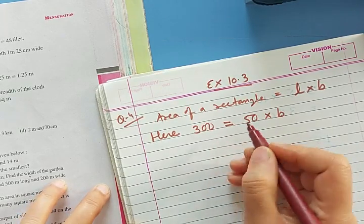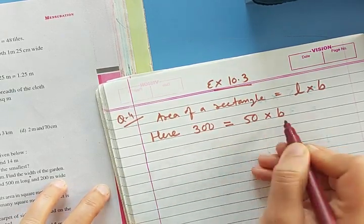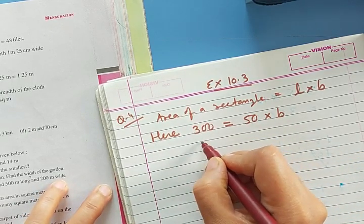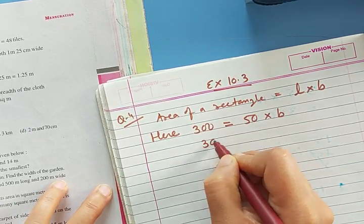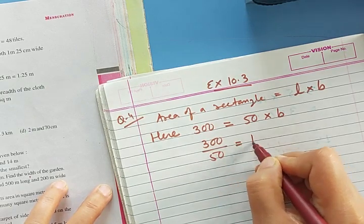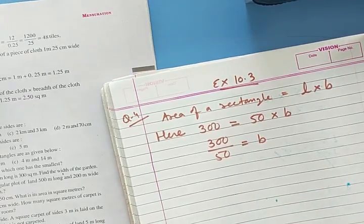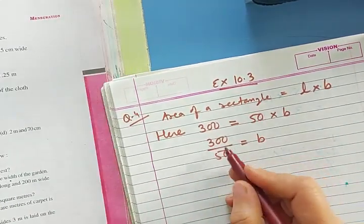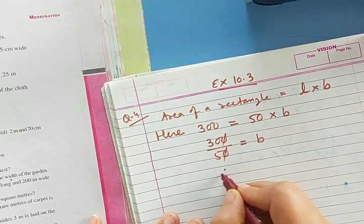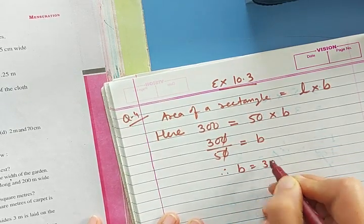Now, you know that to find B, we have to take 50 down to the divide side. So we do 300 upon 50, then we will get B. We cut it off — 5, 6 and 30. Therefore, B is equal to 6 meters.